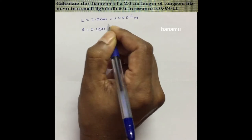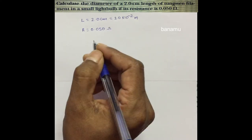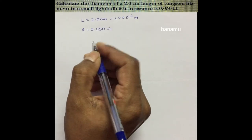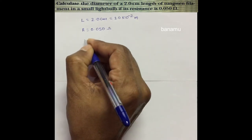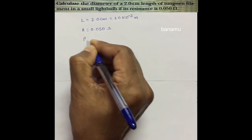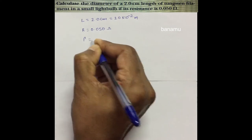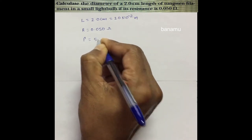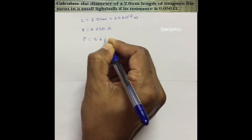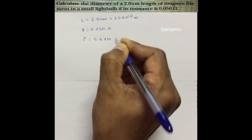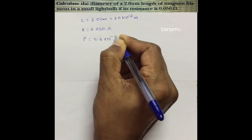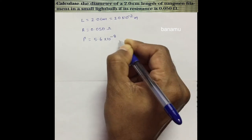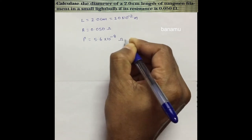The resistivity of tungsten is rho equal to 5.6 into 10 to the power of minus 8 ohm meter.